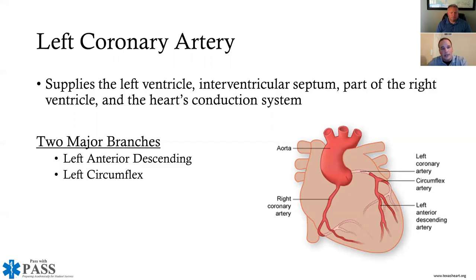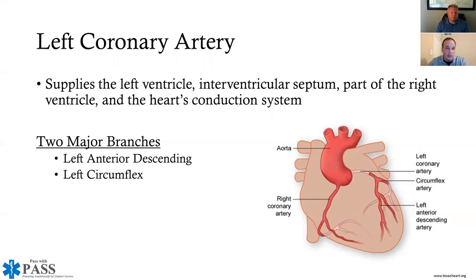The left coronary artery supplies the left ventricle, the interventricular septum — that thick piece of muscle separating the right and left ventricle — part of the right ventricle, and the heart's conduction system, including the SA node, AV node, AV junction, bundle of His, bundle branches, and Purkinje fibers.